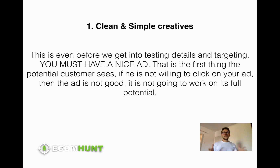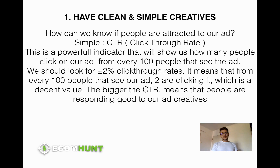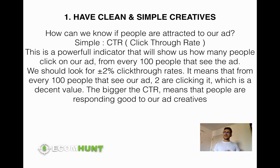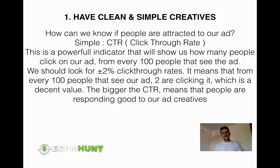You might be wondering: how can I know if people are attracted to my ad? The answer is CTR — click-through rate. It's a really powerful indicator that shows how many people have clicked on our ad from every 100 people that saw it. If you're getting a click-through rate of 2%, it means that from every 100 people that saw your ad, two of them clicked. A 2% CTR is decent — if you're getting 2% or bigger, you're in a good place and your ad is performing well. If you're getting a click-through rate smaller than 1%, you're not in a good place and you might want to change a few things.